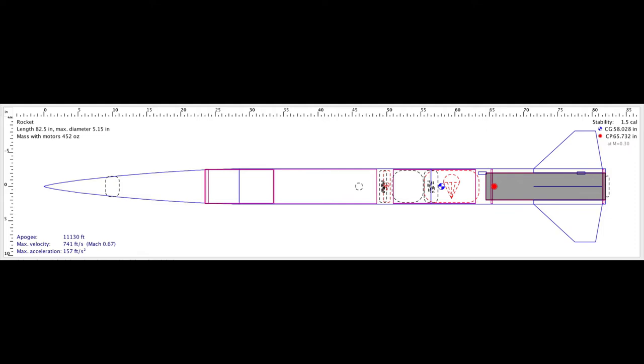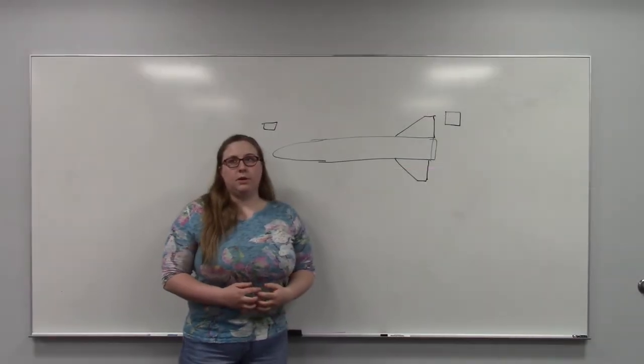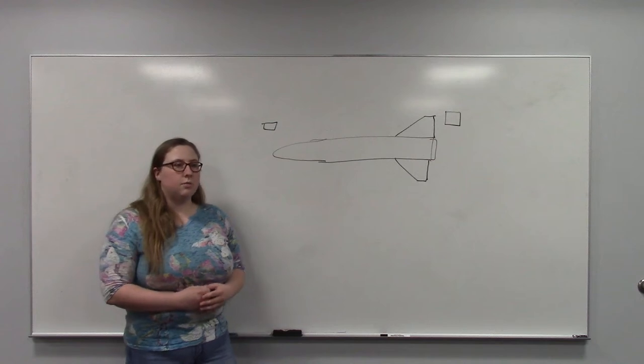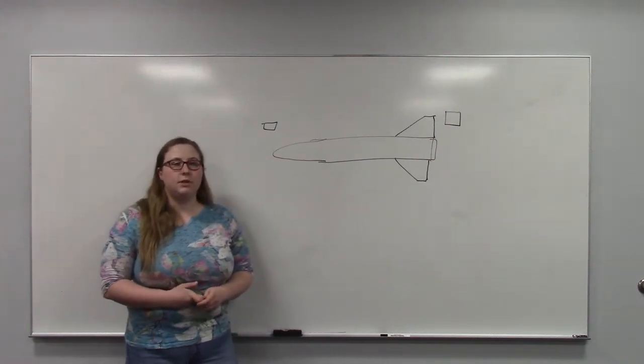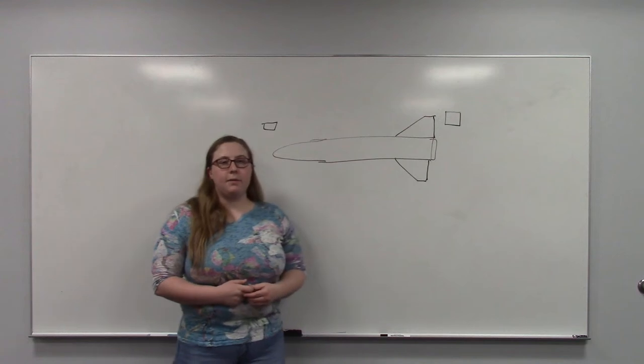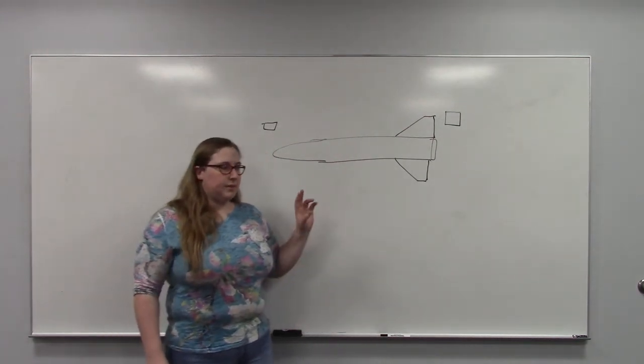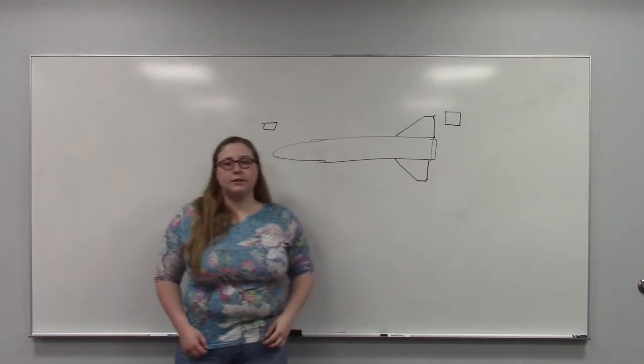Some key aspects of this rocket: there are four trapezoidal fins, a 5.51 bi-diameter and a von Kármán nose cone adding up to a total length of six and three quarters feet. There's a Schraven and Stratolager altimeters on board, which create a redundant dual deployment system for the parachutes. The parachutes are a 24-inch drogue and a 72-inch main. The drogue will deploy at apogee from the fore section and the main will deploy from the aft section at 1,000 feet.